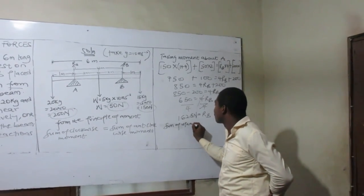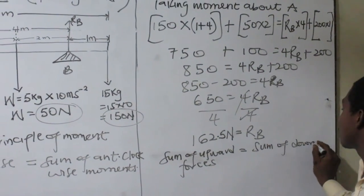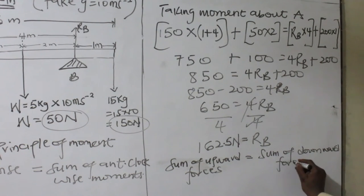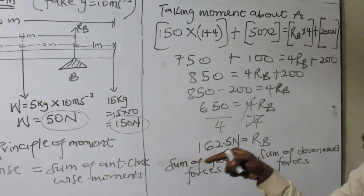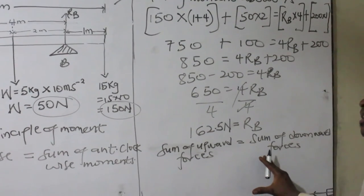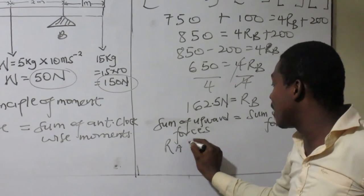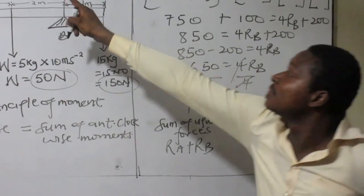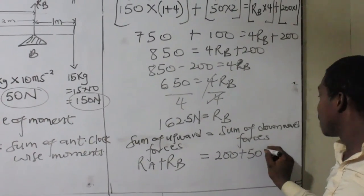The sum of upward forces equals the sum of downward forces. These are the conditions necessary for forces to be in equilibrium. The upward forces are RA plus RB. The downward forces are 200, 50, and 150, which sum to 400.